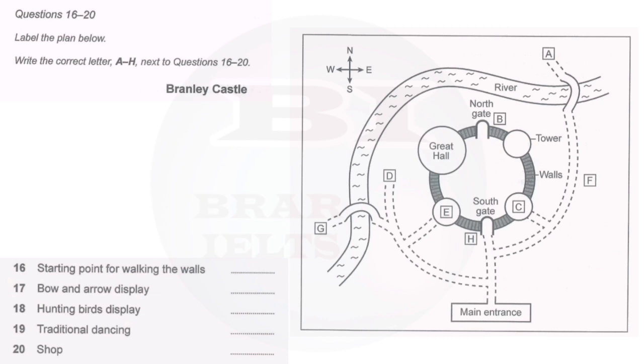If you want to get a good view of the whole castle, you can walk around the walls. The starting point's quite near the main entrance. Walk straight down the path until you get to the south gate and it's just there. Don't go on to the north gate. There's no way up from there.